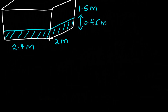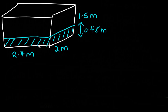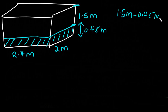So what do we do for this question? There is water in this tank up to a height of 0.45 meters. To fill up this tank it means we need to get the remaining height. The entire height is 1.5 meters and already 0.45 meters is occupied by water, so the remaining height is 1.5 minus 0.45, which is 1.05 meters.